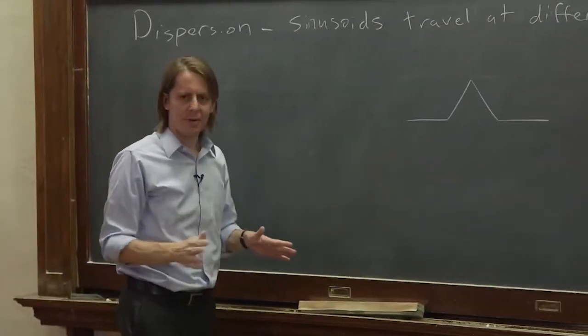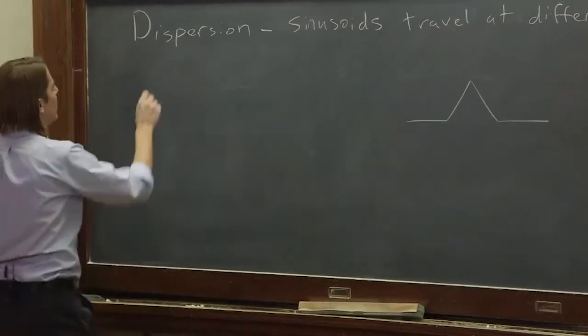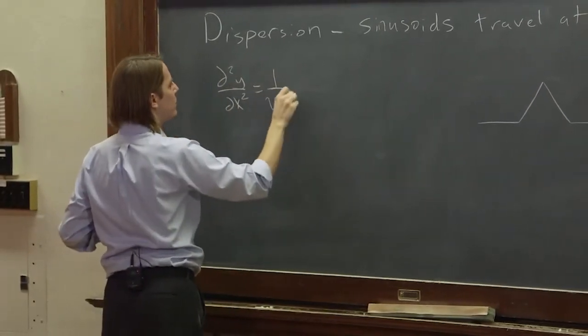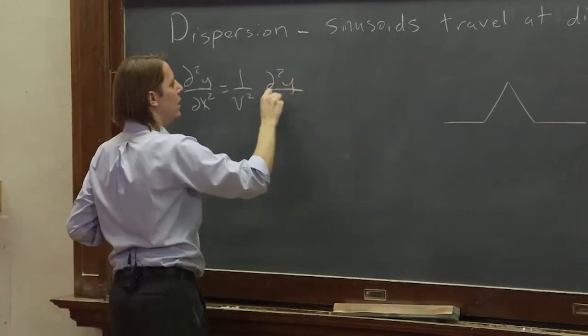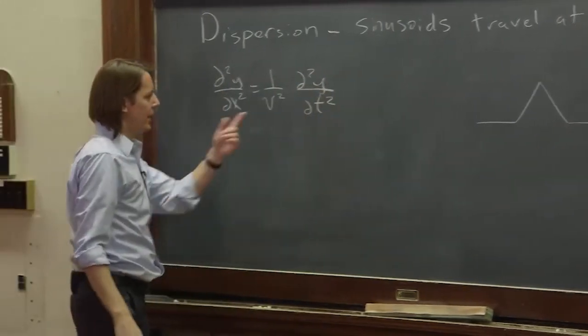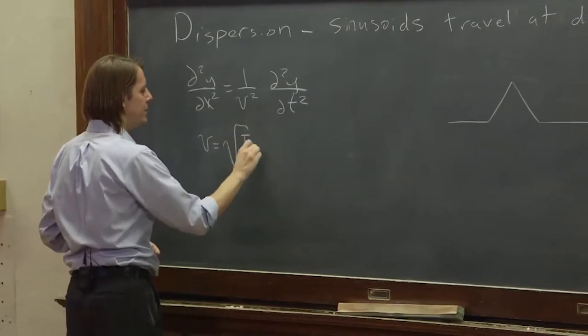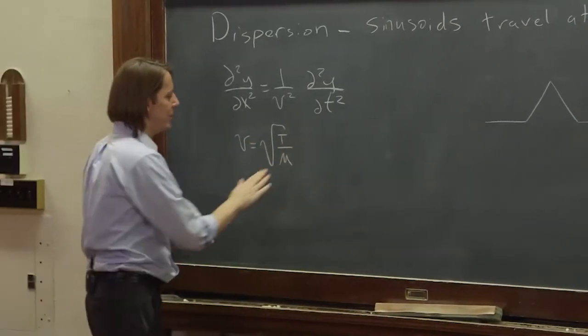Now you may say this doesn't sound right because we derived a wave equation and it looked like this: d²y/dx² equals 1 over v² d²y/dt². And that's a constant because v was the square root of the tension over the mass density.